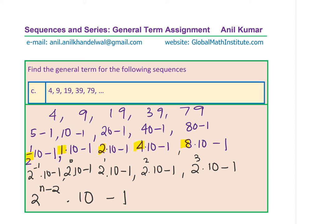So now we can write the general term tn = 10 × 2^(n−2) − 1. Do you see the strategy? How we derived very easily the formula, which is actually quite complicated. I hope you have got this one also.